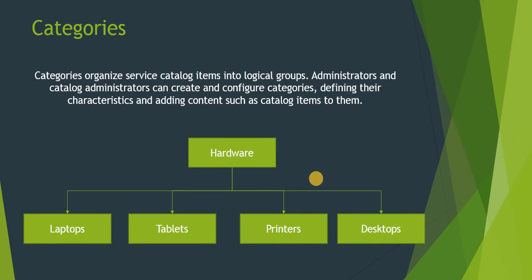Next is categories. Under a catalog there are categories, which organize service catalog items into logical groups. Administrators and catalog administrators can create or configure these categories, defining their characteristics and adding content such as catalog items to them. For example, under a service catalog you can create a hardware category, and under that you can create further sub-categories like laptops, tablets, printers, and desktops.